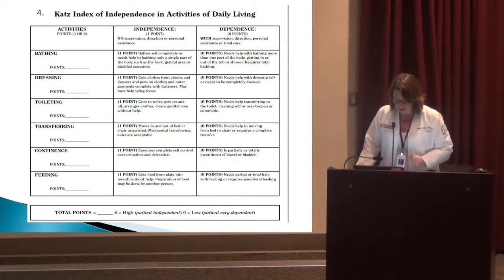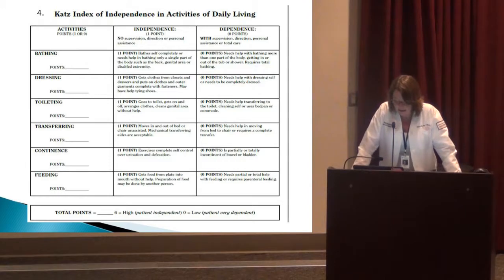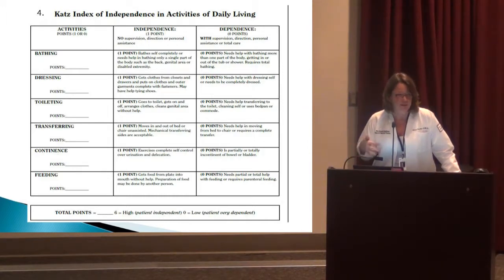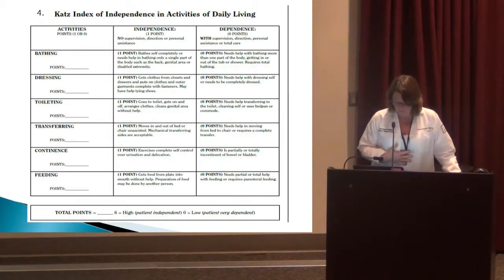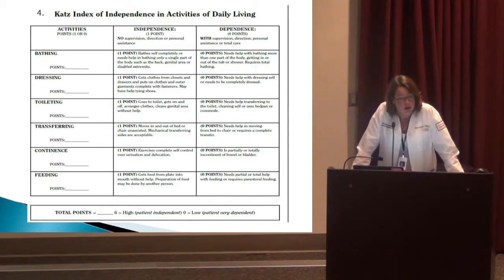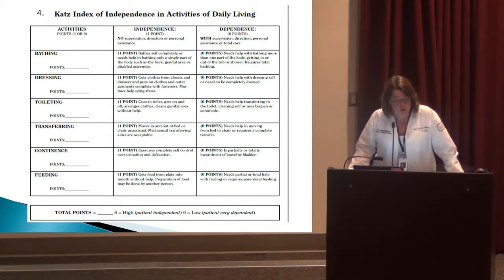Another frailty measure is the independence of activities of daily living — the KATZ score. Patients fill it out when they come to our clinic. If they can't perform toileting, dressing, transferring, or are incontinent, those can be used as frailty measures as well.